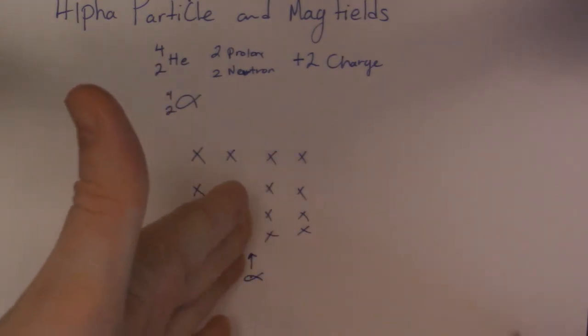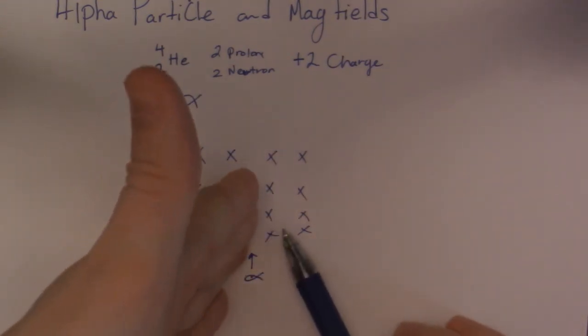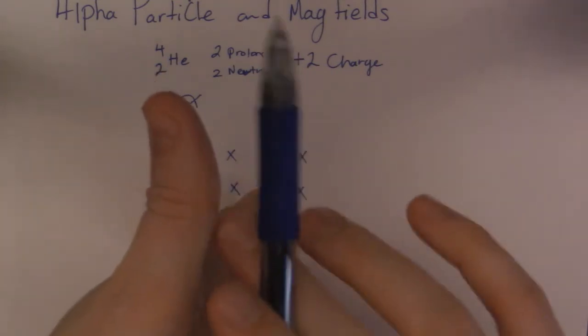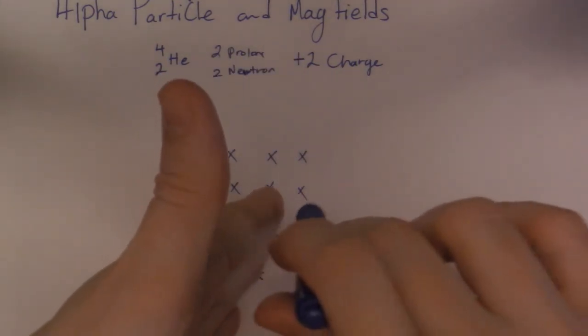And then I turn it to the direction of the fish going into the field, the alpha particle. So my thumb points to the direction of the alpha particle. My hands are pointing directly into the page.